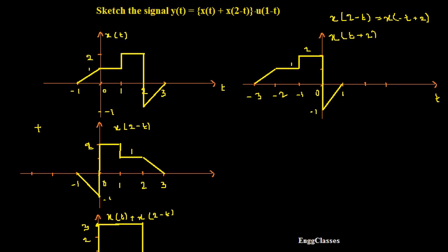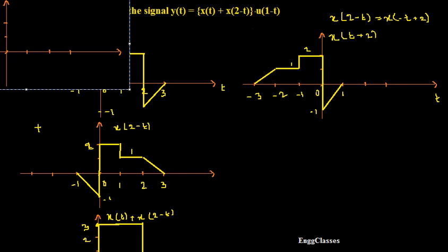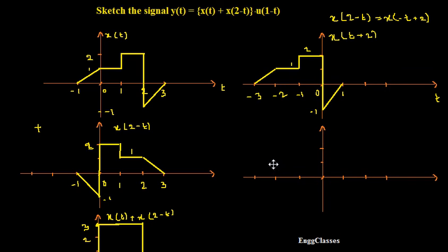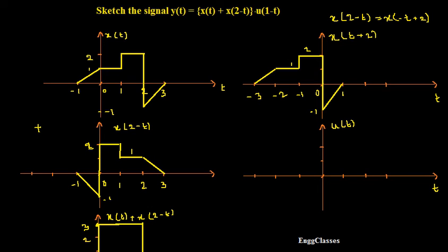The next task is to multiply such a signal with U of 1 minus t. U of 1 minus t is a shifted and reflected version of the unit step signal. Let me get the X axis and Y axis and sketch U of t first. For negative values of time it is 0, and for positive values of time its amplitude is 1. At 0 it is undefined. This is how U of t looks like, and it continues till plus infinity with amplitude 1.